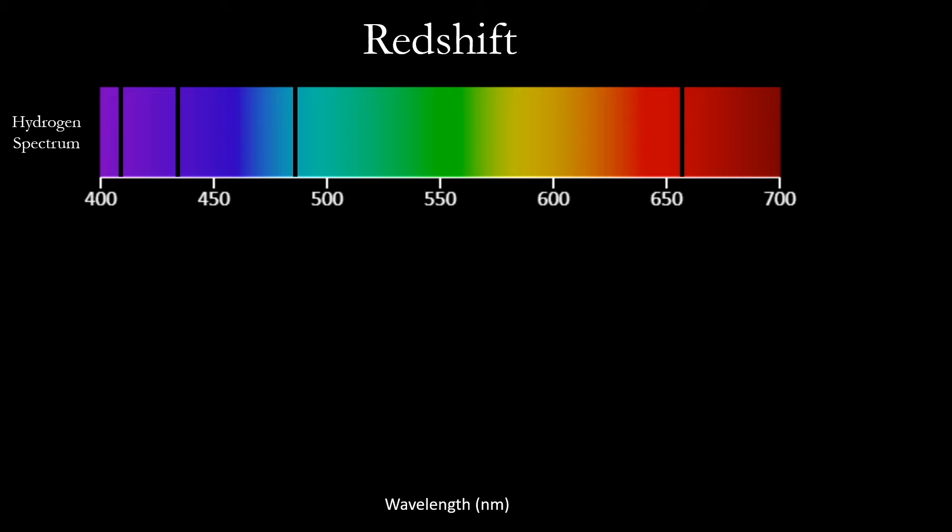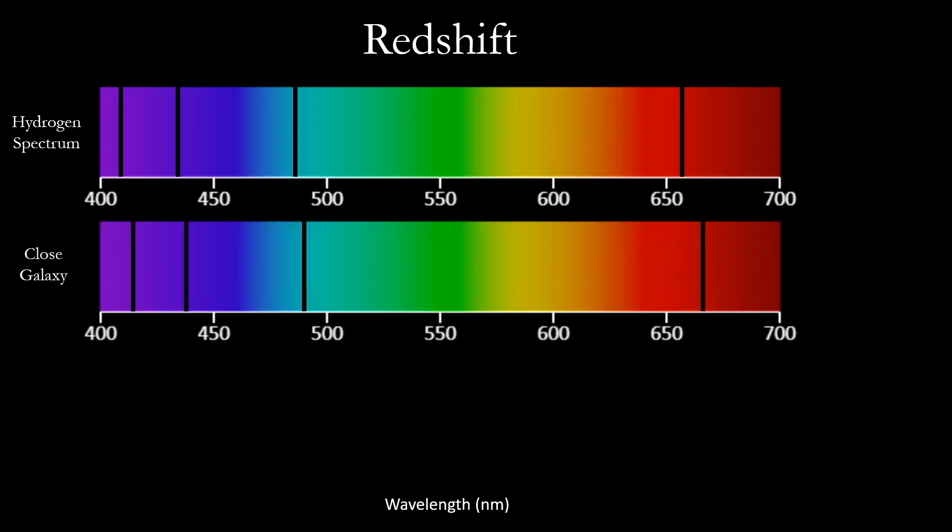If we observe hydrogen in a relatively close galaxy that is moving away from us, how do you predict this hydrogen absorption spectrum might be different? You'll notice that all the lines moved towards the red end of the spectrum. This is called redshift.